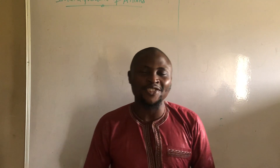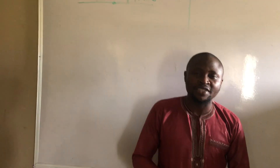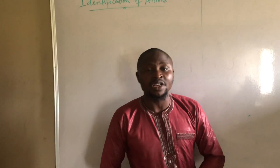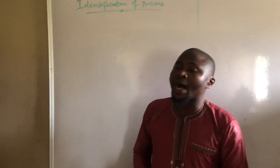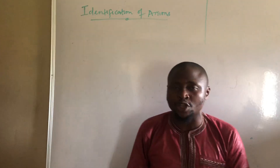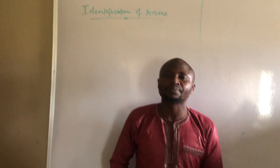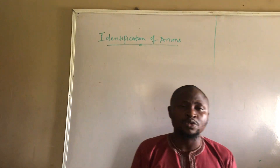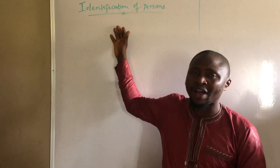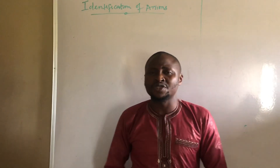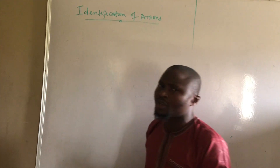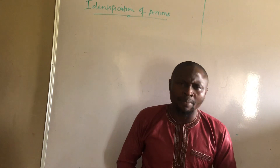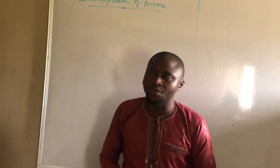Good day everyone, welcome back to our class ChemEasy International, where we do justice to demystifying difficult areas in chemistry. From our last class where we looked at identification of anions, last week we were able to cover a list of objectives. We told you the different classes of anions — anions are also called acid radicals. Today we want to hit the ground running. If there's anything you are not clear about, please ask in the comment section.